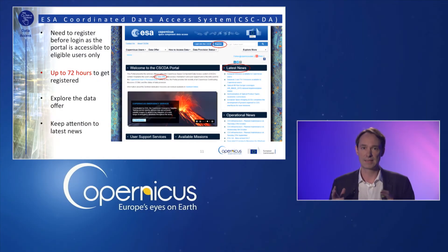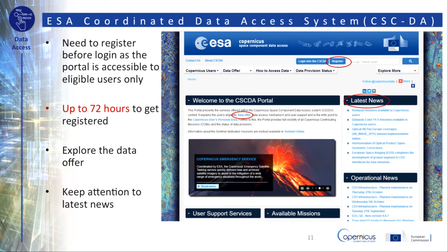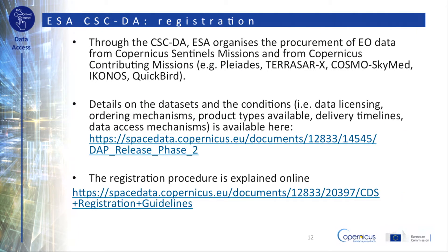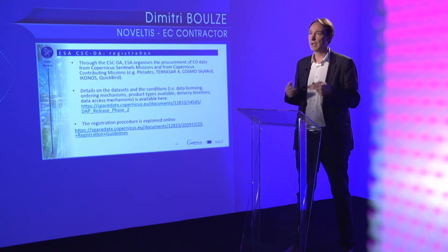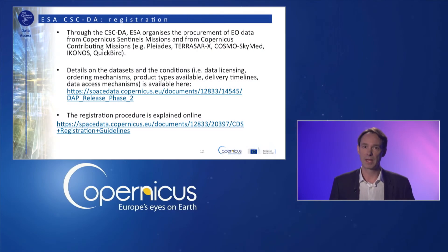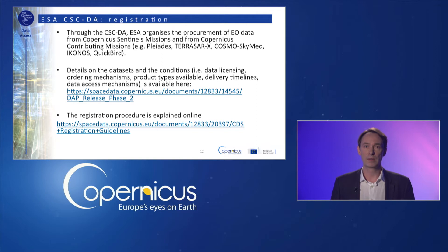The second ESA mechanism is the Coordinated Data Access System, called CSCDA. It does not work with a self-registration like the previous one — you have to be an eligible user, and it can take up to 72 hours to get registered. Through the CSCDA, ESA organizes the procurement of Earth observation data from Copernicus Sentinel missions and from Copernicus contributing missions, such as Pleiades, TerraSAR-X, COSMO-SkyMed, IKONOS or QuickBird. Details on conditions, data licensing, ordering mechanisms, product types, and delivery timelines are all available via the links on these slides.